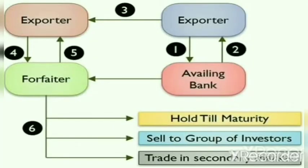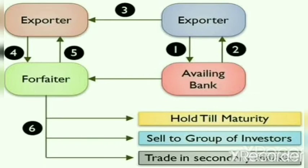The concept of forfeiting involves four important parties: the exporter and the importer, the forfaiter, the exporter's bank, and the importer's bank — also called the availing bank. The first process happens between the exporter and the availing bank. The second transaction involves both the exporter and the availing bank, which then connects the exporter and the importer, which then connects to the forfeiting bank in the fourth and fifth processes. The forfaiter performs functions such as holding the amount till maturity, selling it to a group of investors, and enabling trade in the secondary market.